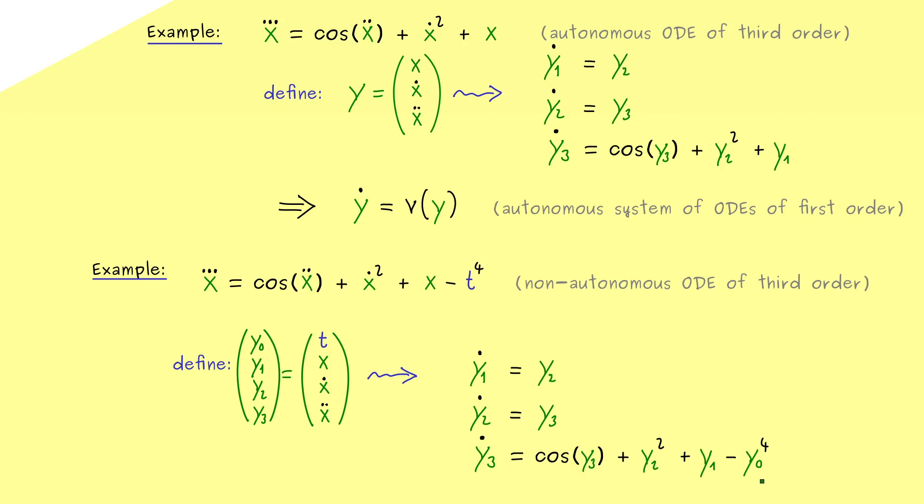However this means we have to introduce a new equation to describe our t. But of course this is very simple because we can simply calculate the derivative of t. So we see y0 dot is equal to 1. So in the end we see this does not change anything. It does not make the ODE simpler or easier to solve. But we see we can transform a non-autonomous ODE into a system of autonomous ODEs.